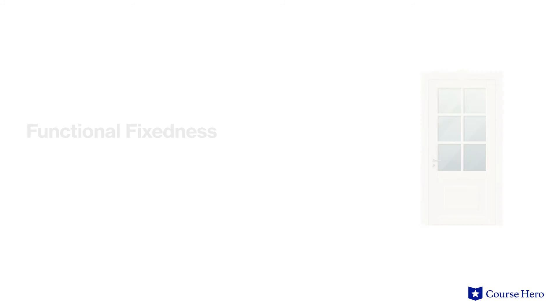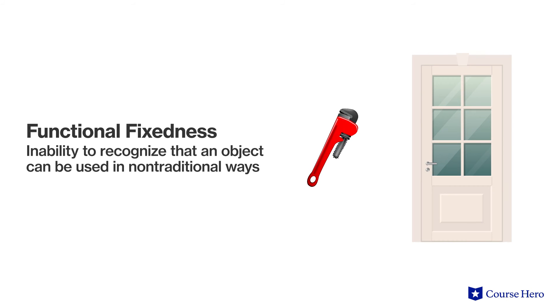Even if someone avoids these biases, they may still run into other barriers to effective problem solving. Functional fixedness is the inability to recognize that an object can be used in nontraditional ways, such as using a wrench as a paperweight or to prop open a door. Rigid thinking, or a fixed perspective that is stubbornly maintained, as well as the inability to recognize irrelevant information, can also inhibit problem solving.